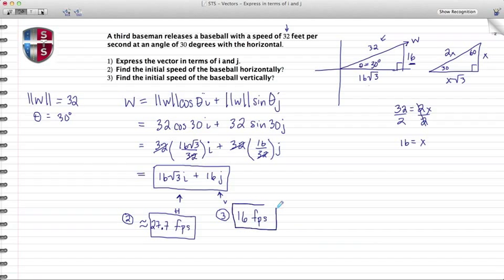This sums up this video on finding the vector expressed in terms of i and j and the magnitudes or speeds of a particular object moving horizontally and vertically. Thank you again for watching a video by Speller Tutorial Services. Please friend us on Facebook and subscribe to our YouTube channel.